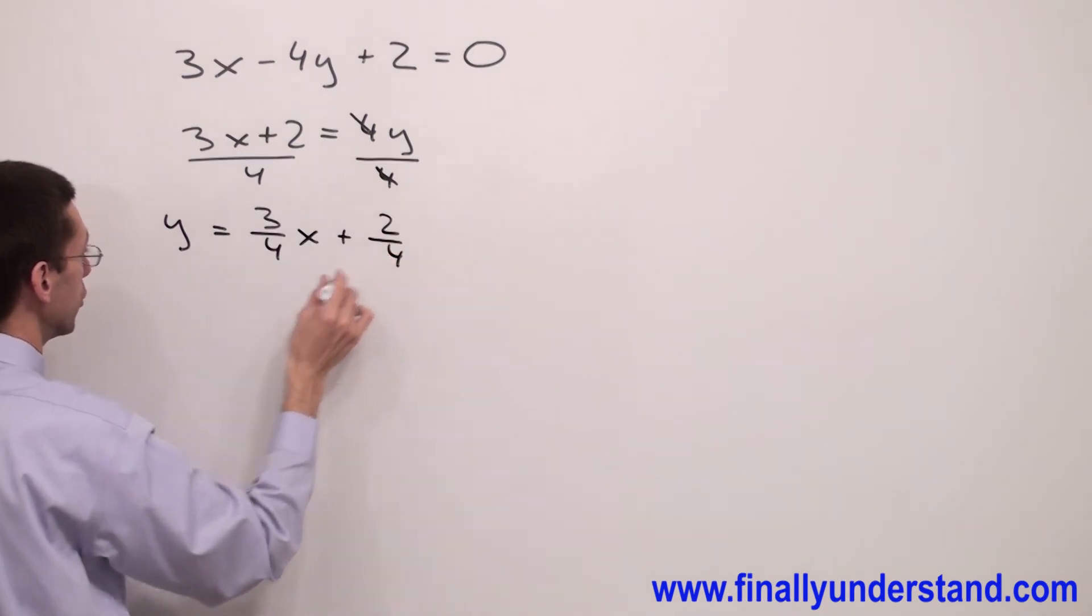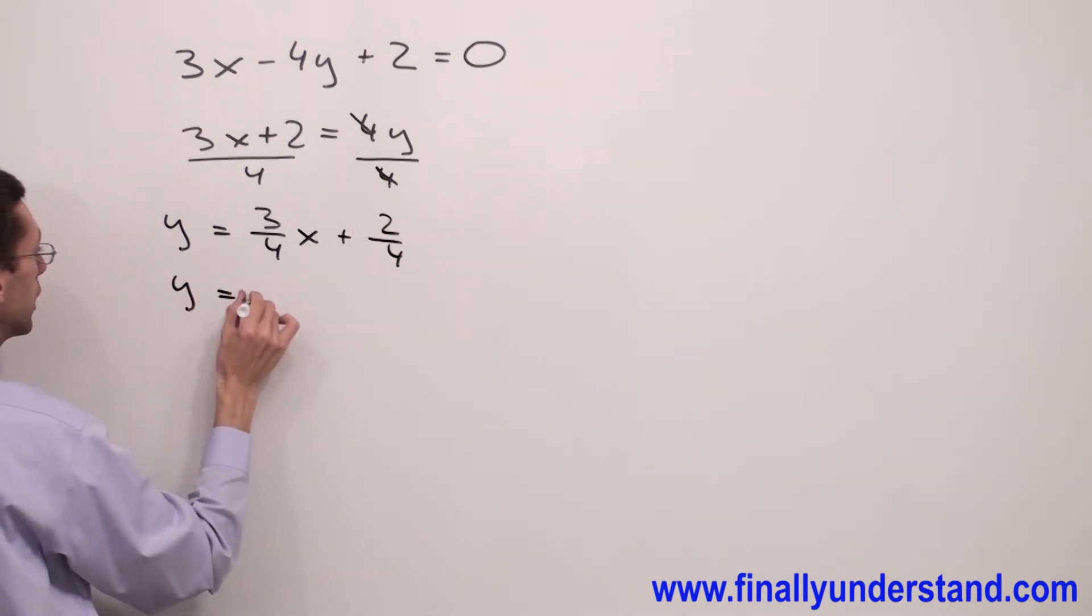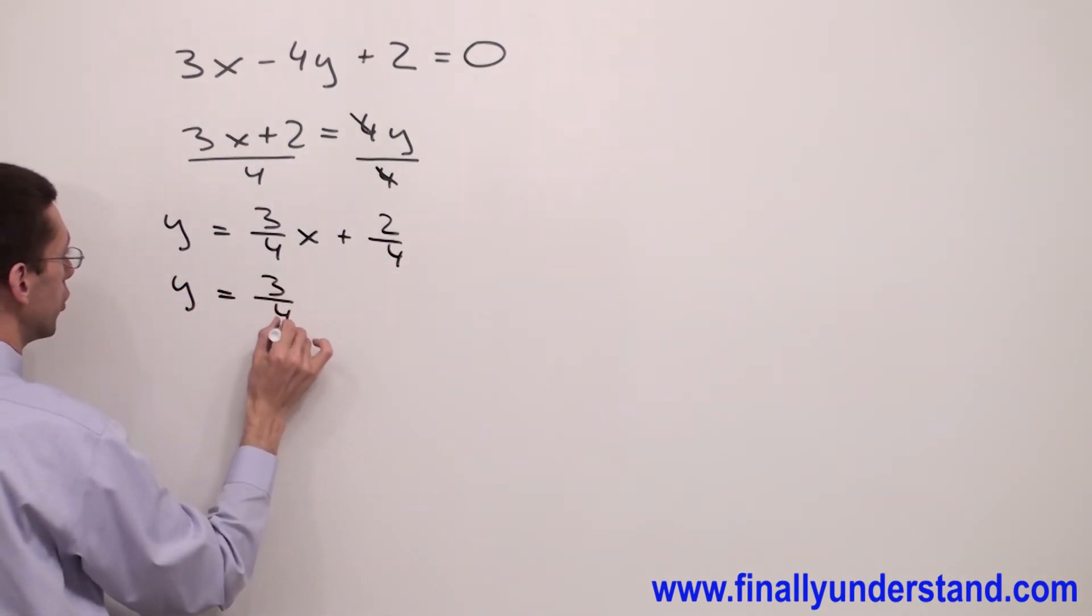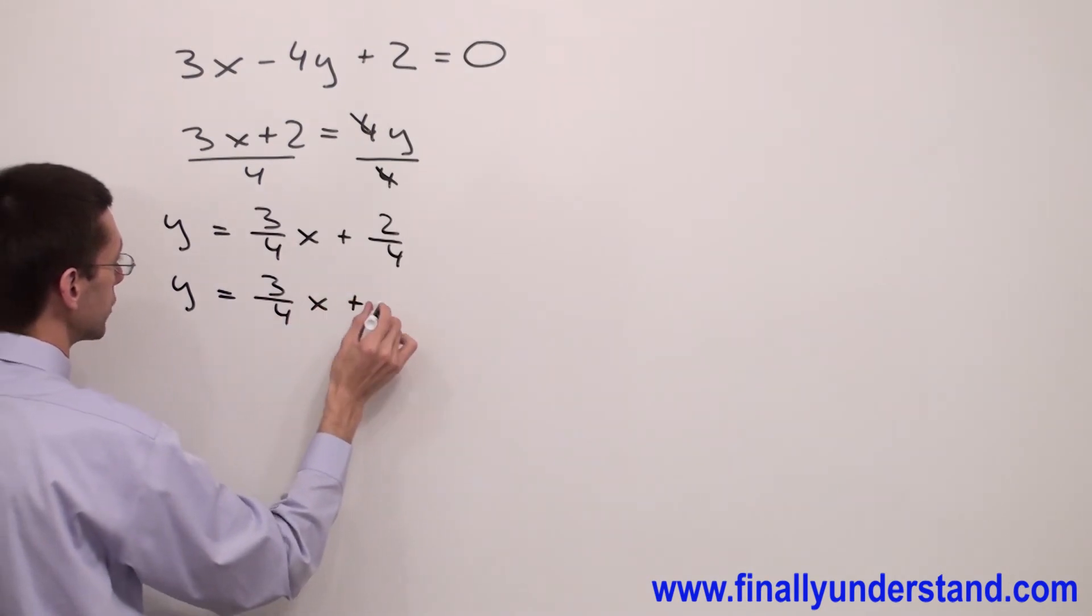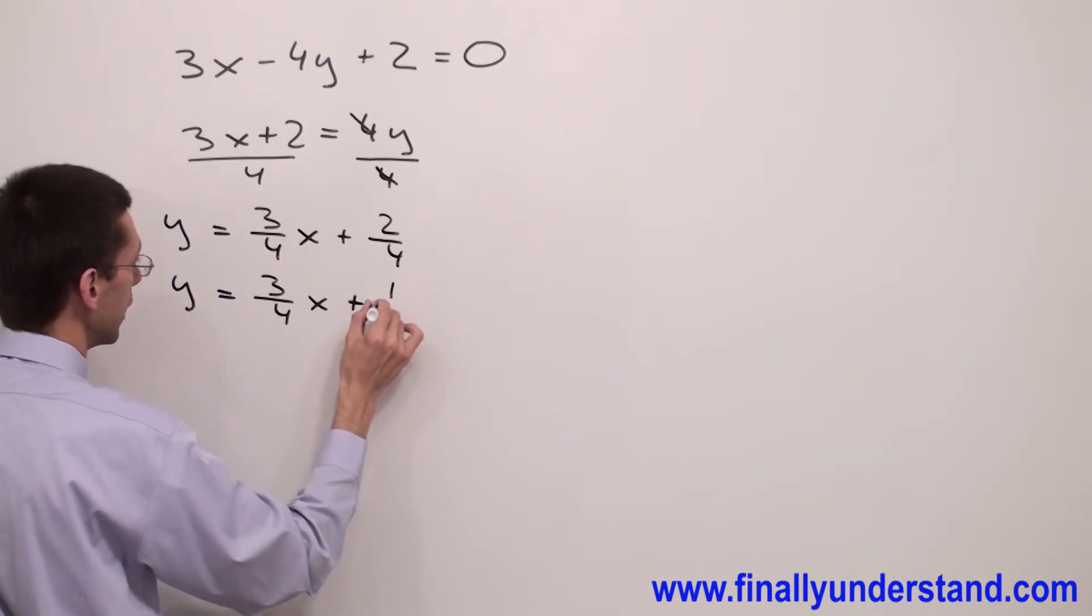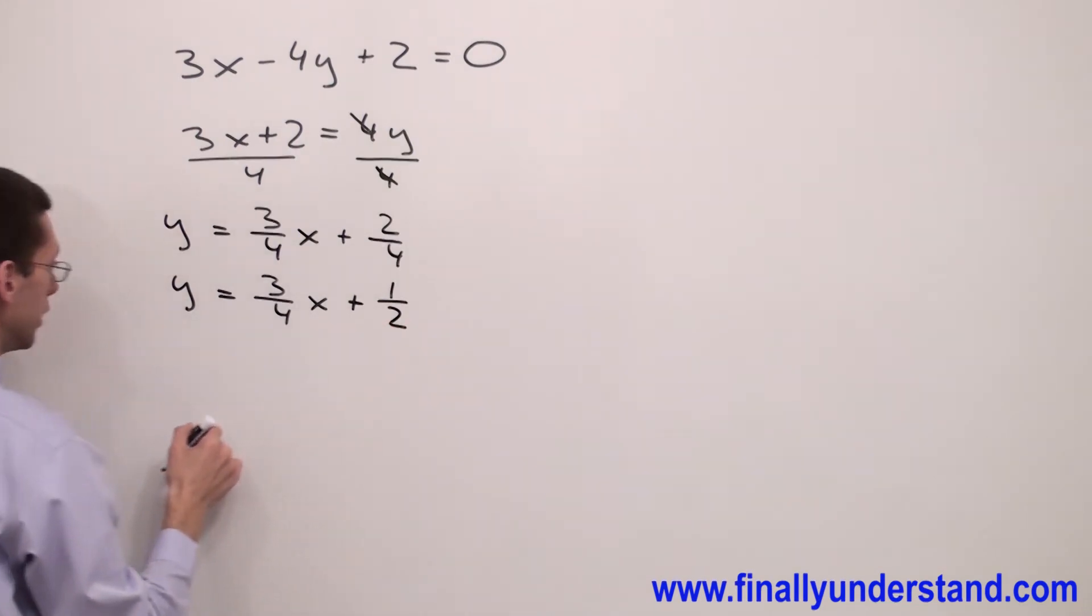Which equals y equals 3/4x plus 1/2. Now the slope-intercept form says y equals mx plus b.